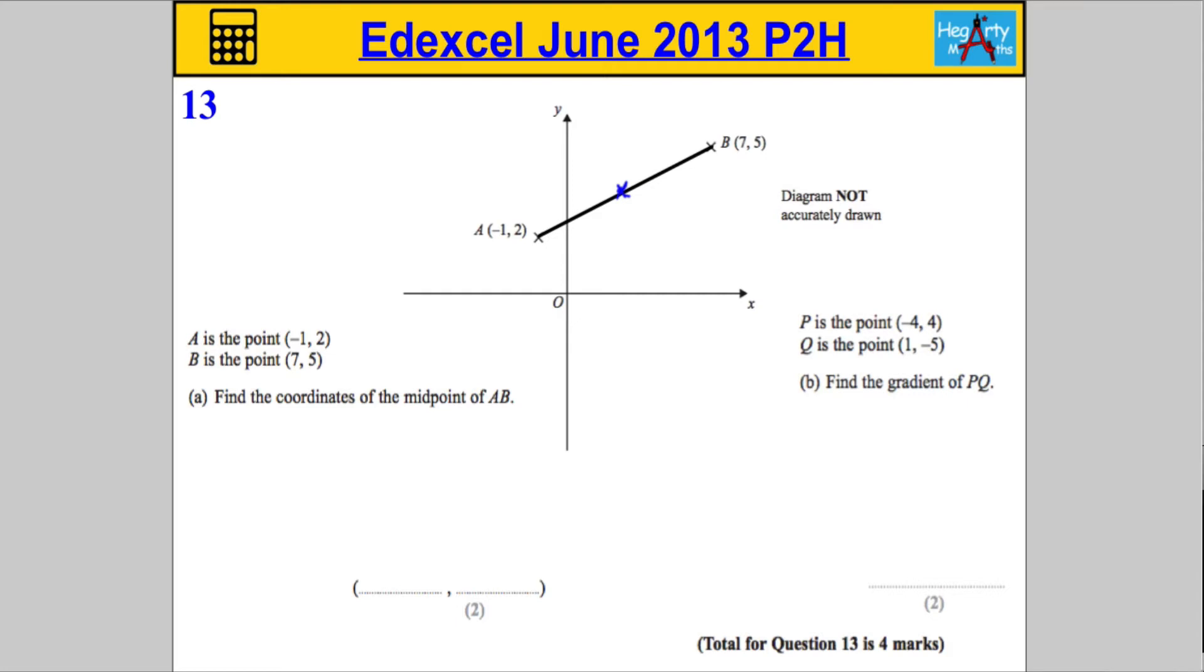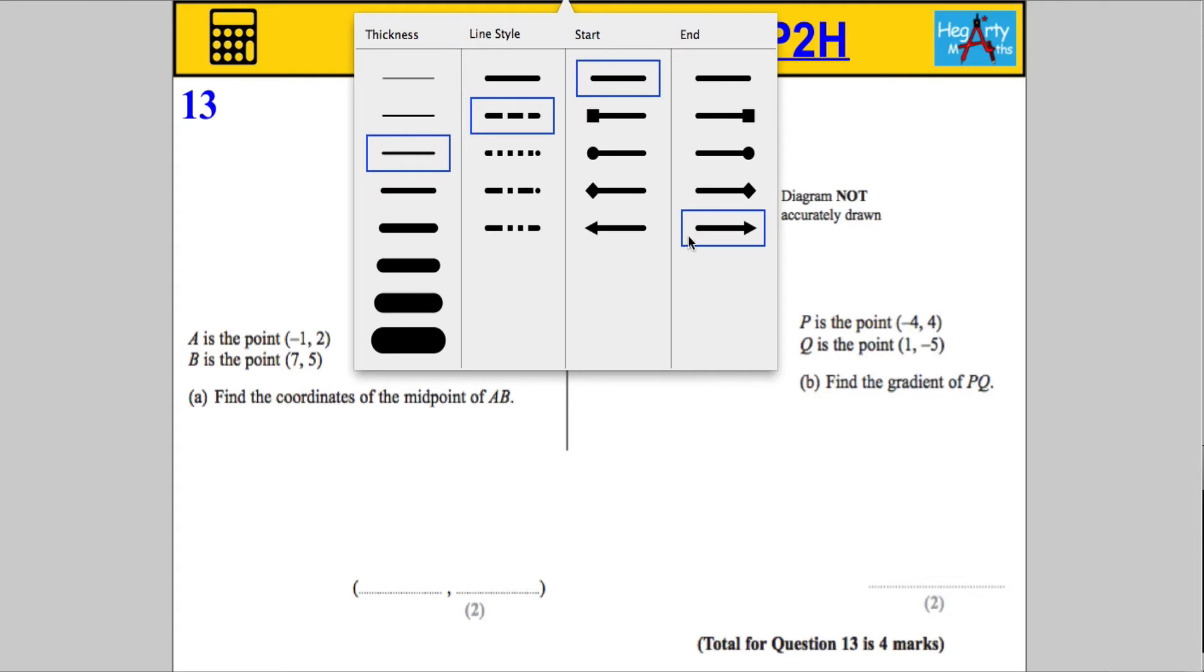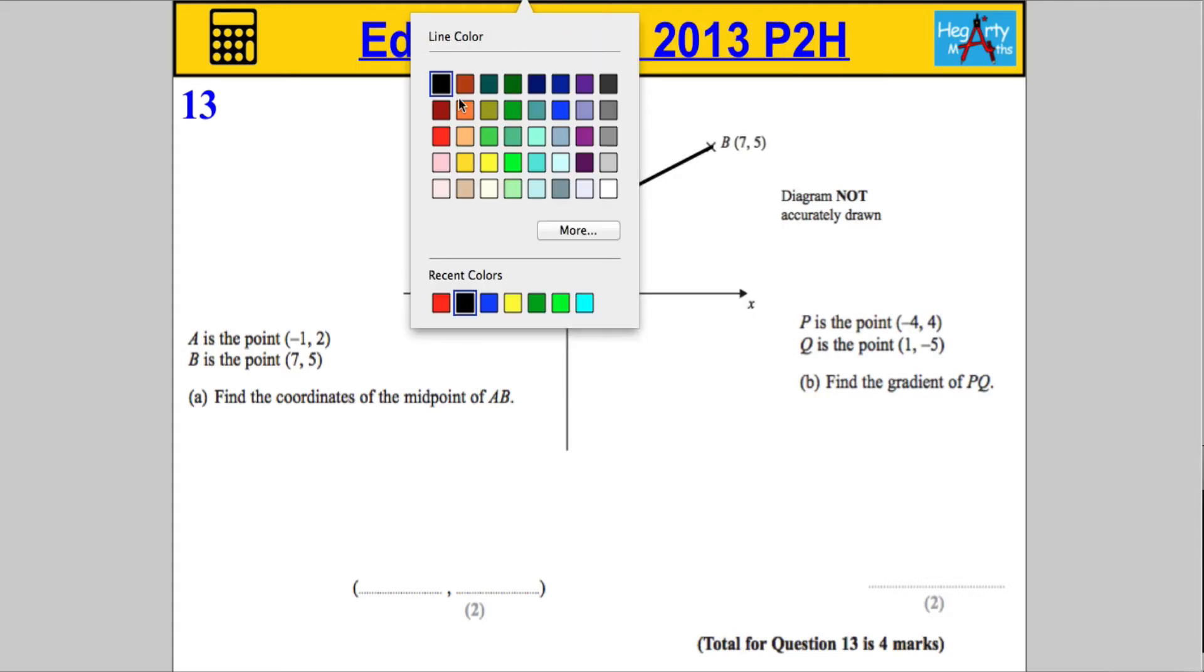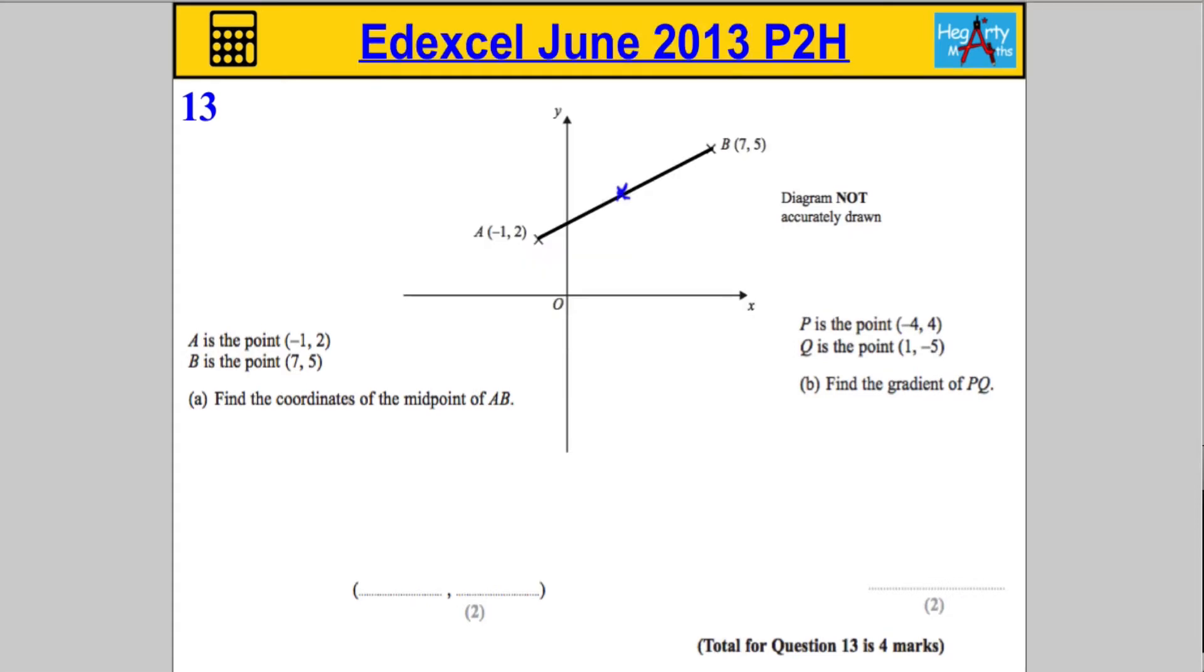In order to find the midpoint, what I'm going to consider is how far across does the line travel as it moves from A to B? So as we go from A to B, how far to the right do we move? And then I'm going to consider how far up it's going to move.